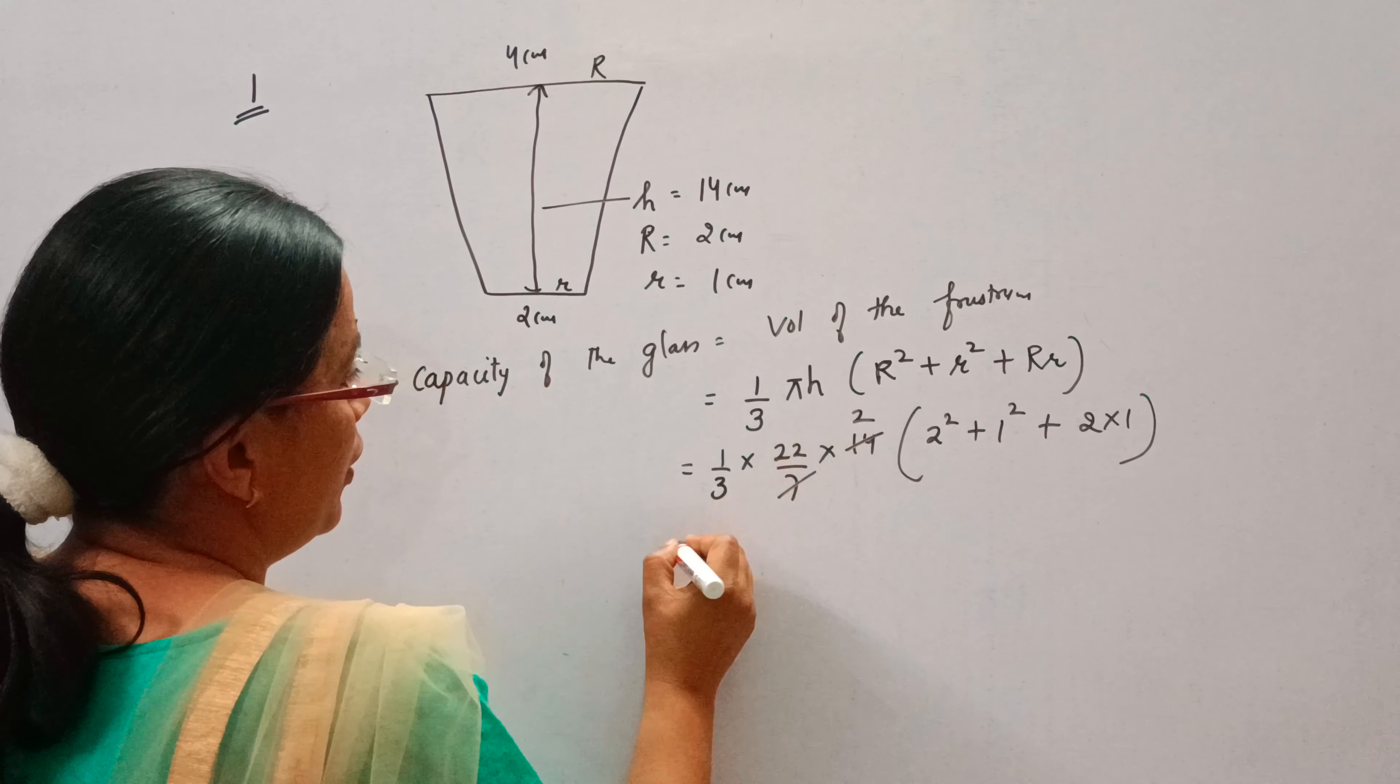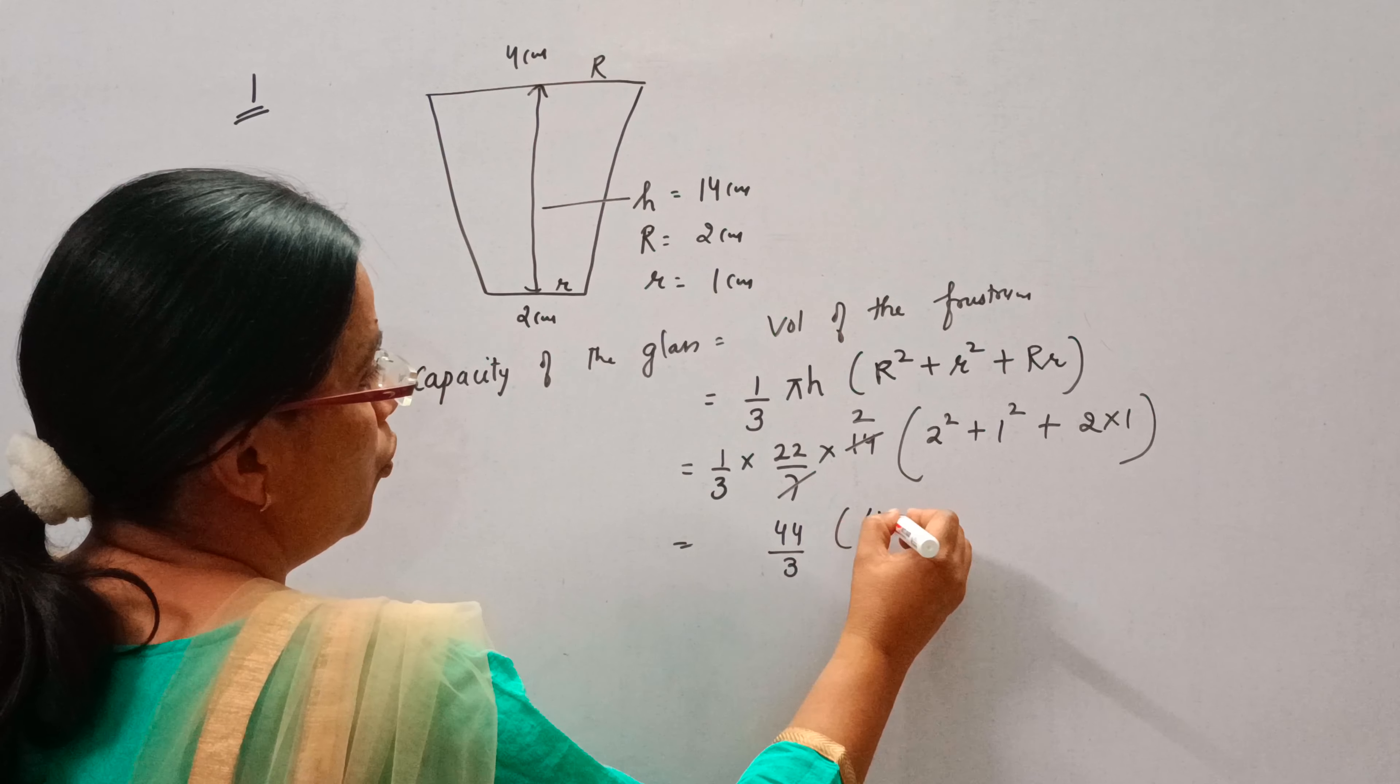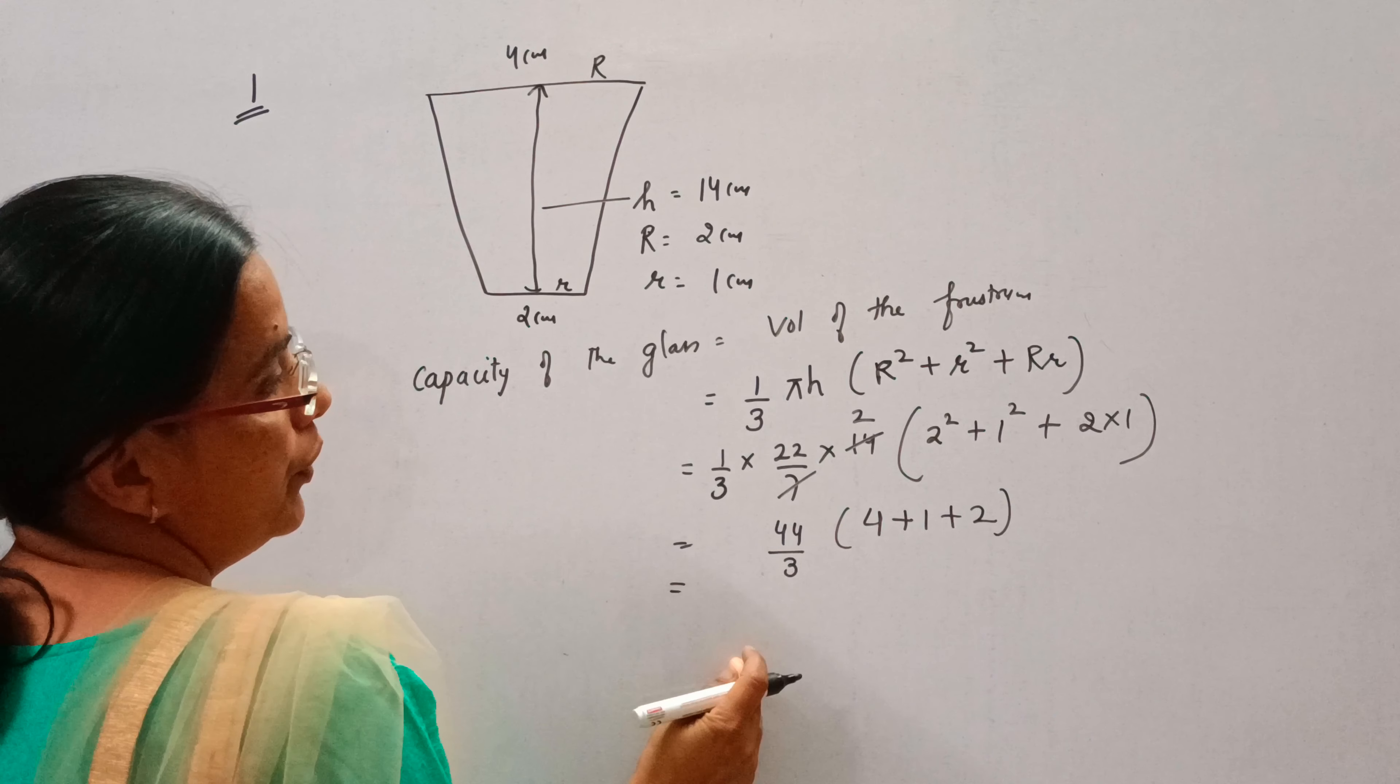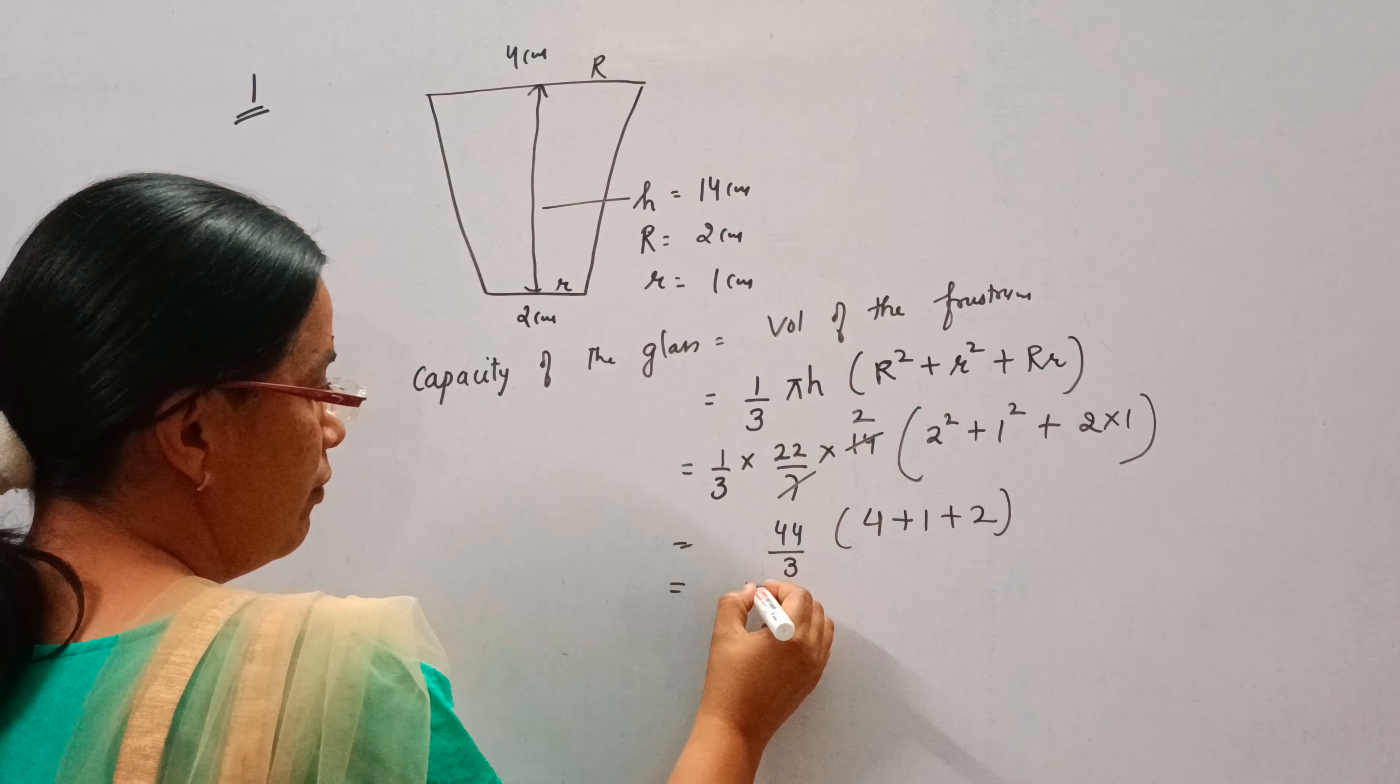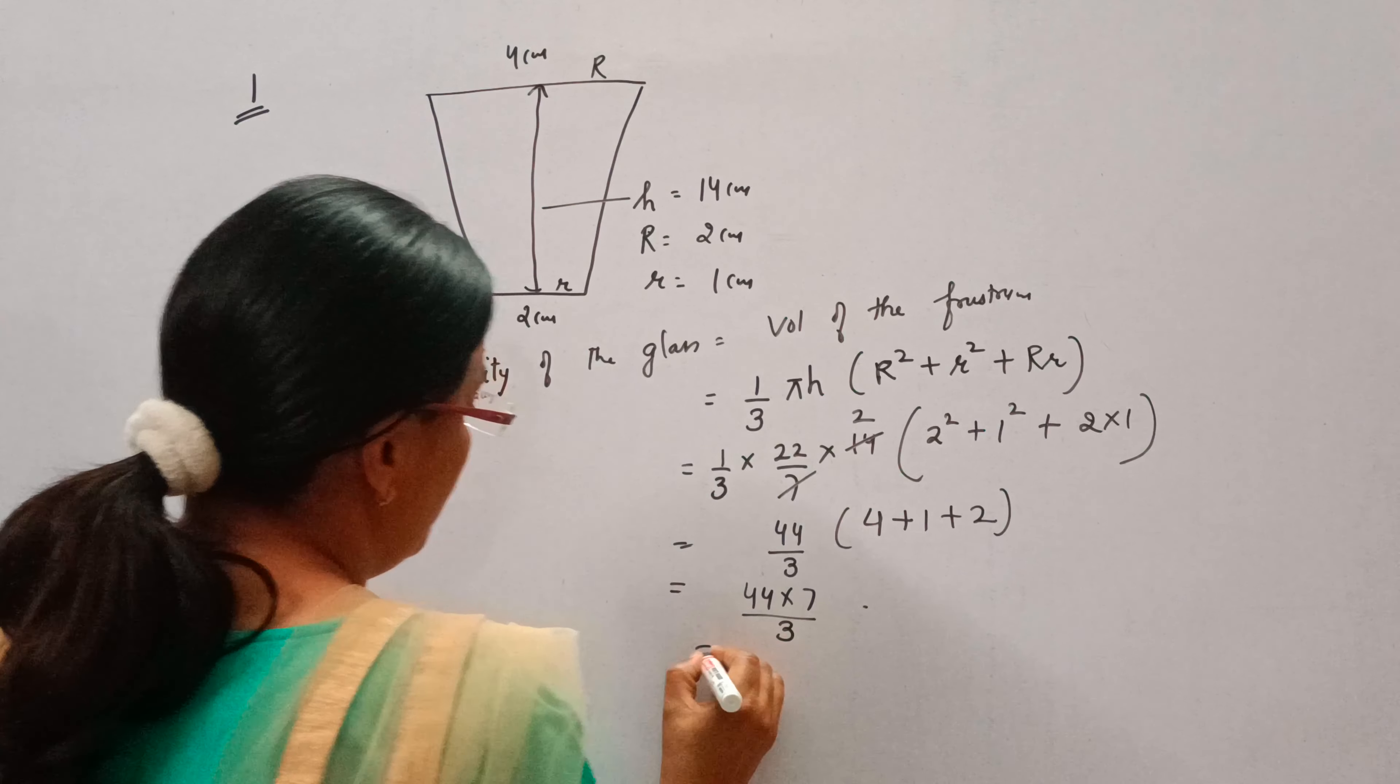7 into 14, 44 by 3. 2 square is 4, 1 square is 1, 2 into 1 is 2. 4 plus 1 is 5, 5 plus 2 is 7. 44 into 7 by 3.